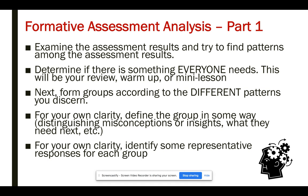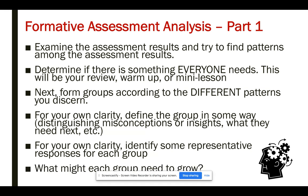Once you've paused and done that, for your own clarity, identify some representative responses for each group. If you said this group really got it and is ready to move on to a more complex text or problem, provide a sample answer. If it was a graph, describe what they did on the graph. Then the group that got this but didn't make the connection, and those that didn't meet any of the learning goals. Don't just say high, medium, and low — try to be more specific. Pull out sample answers, and then start thinking about what each group needs to take their next step.